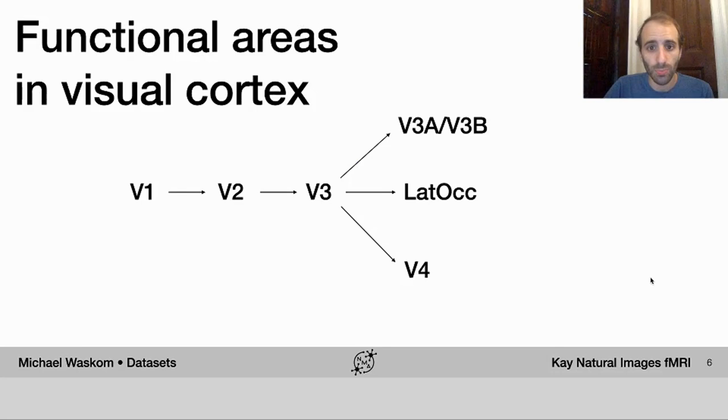Another really important aspect of this data set is that fMRI measures responses in multiple brain areas simultaneously. In this data set, there are data from seven different areas in visual cortex. Now as you may know, functional areas in visual cortex are organized in a roughly hierarchical processing stream.